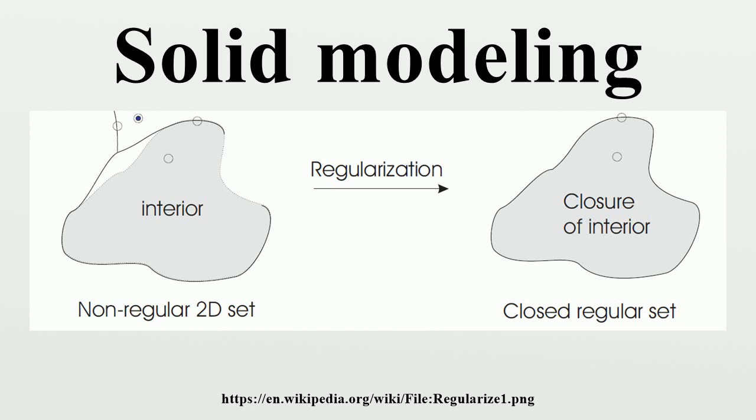Parametric and feature-based modeling: Features are defined to be parametric shapes associated with attributes such as intrinsic geometric parameters, position and orientation, geometric tolerances, material properties, and references to other features. Features also provide access to related production processes and resource models. Thus, features have a semantically higher level than primitive closed regular sets. Features are generally expected to form a basis for linking CAD with downstream manufacturing applications, and also for organizing databases for design data reuse.